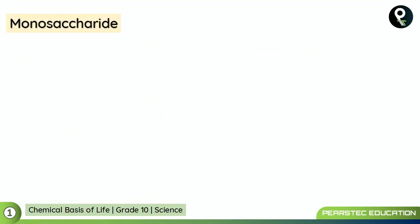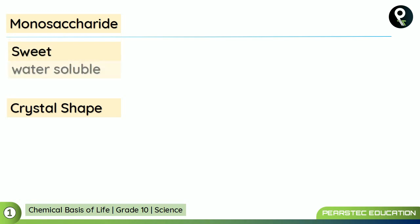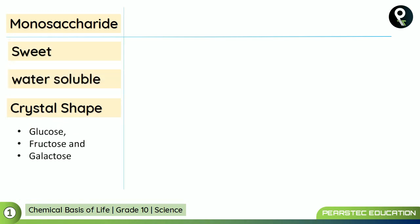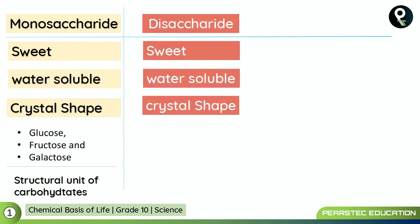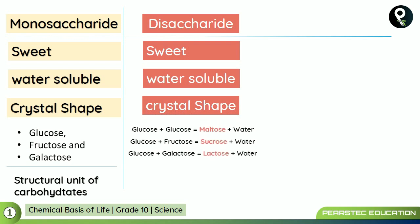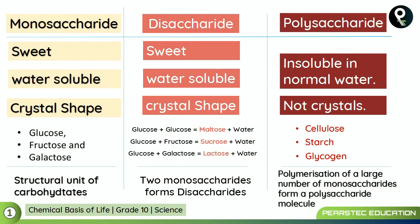Full carbohydrate revision: Monosaccharides are crystal in shape, sweet, and water soluble — divisions are glucose, fructose, and galactose; the structural unit of carbohydrates is the monosaccharide. Disaccharides are sweet, water soluble, and crystal in shape — glucose + glucose form maltose, glucose + fructose form sucrose, glucose + galactose form lactose, and water is released in each. Two monosaccharides form disaccharides. Polysaccharides are insoluble in normal water and not crystal, unlike disaccharides and monosaccharides — divisions are cellulose, starch, and glycogen. Polymerization of a large number of monosaccharides forms a polysaccharide molecule.